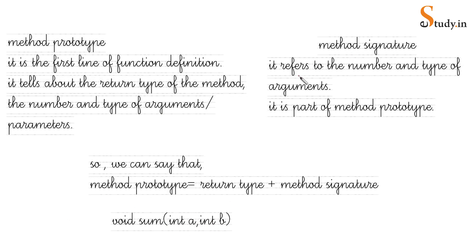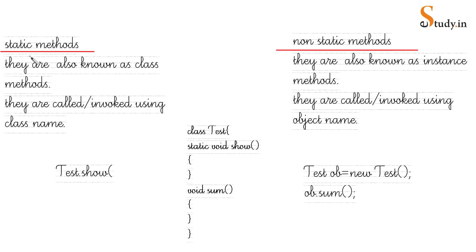A method signature, on the other hand, refers only to the number and type of arguments — it does not include the return type. So: method prototype = return type + method signature, or method signature is a part of method prototype. This difference is very important and has appeared in many exams.